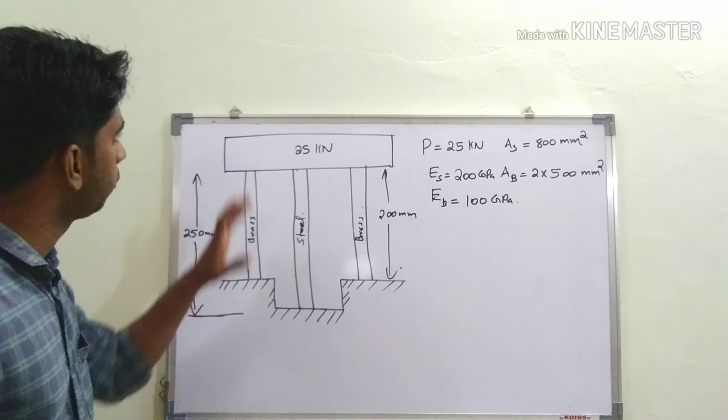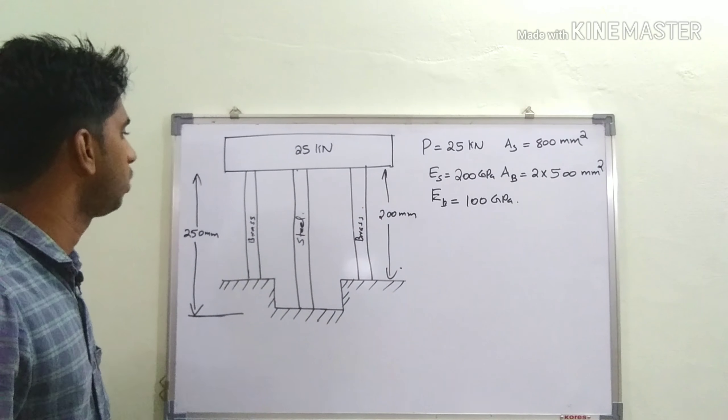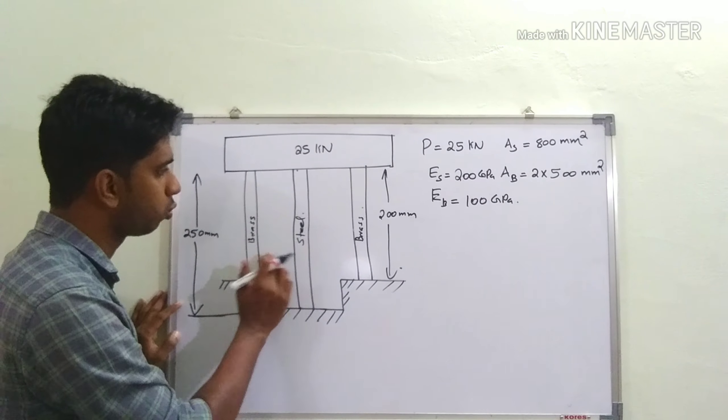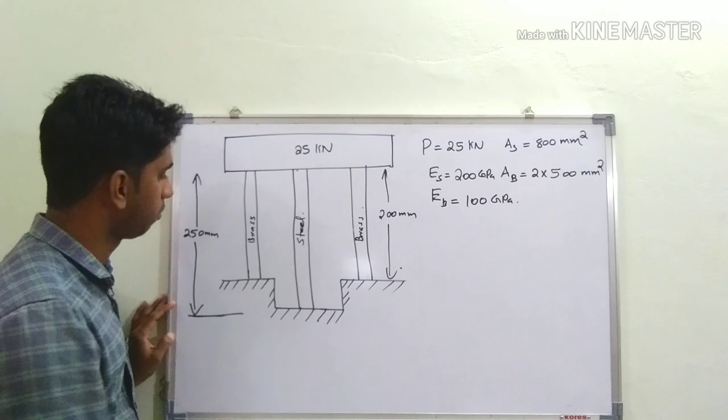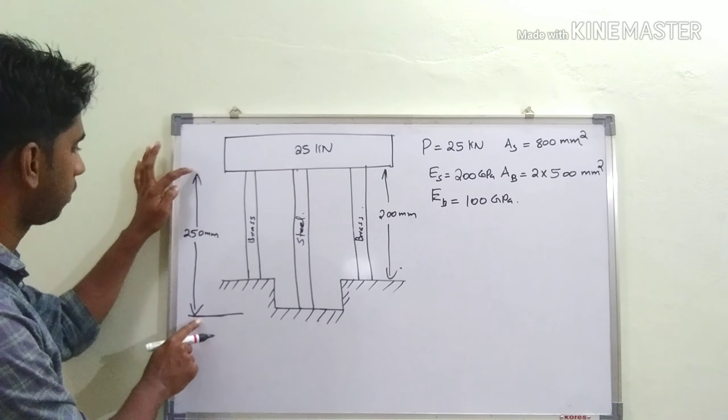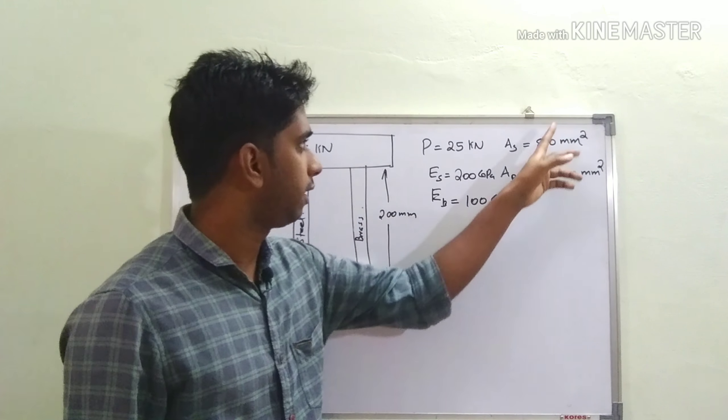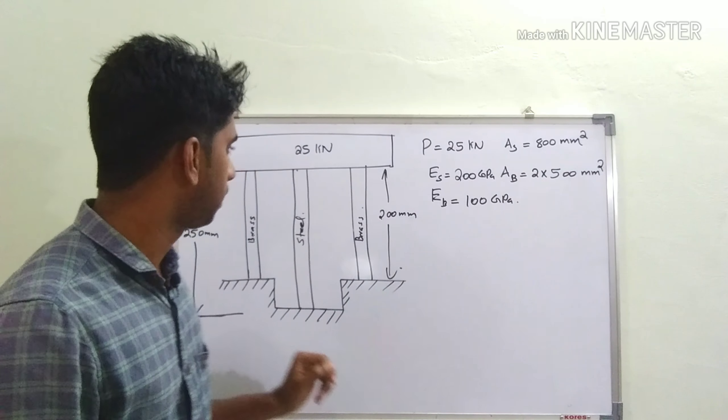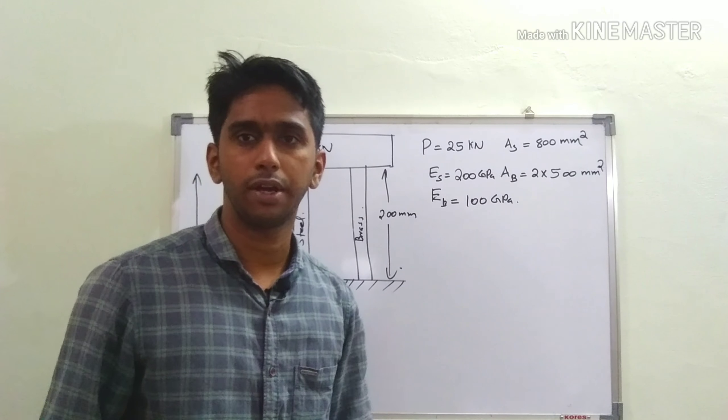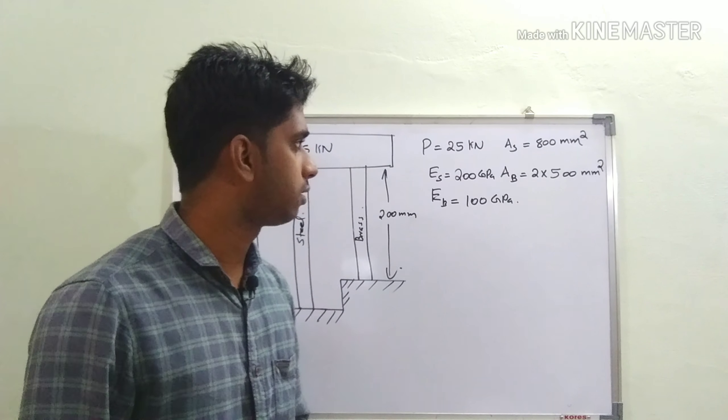Here we have a 25 kN load supported by two brass rods and a steel rod. The length of the steel is 250 mm, and the length of the brass rods is 200 mm. Remember that the area of one brass bar is 500 mm² each, so to find the total area of brass bars, multiply by two.